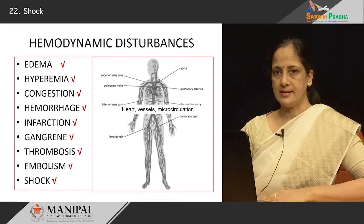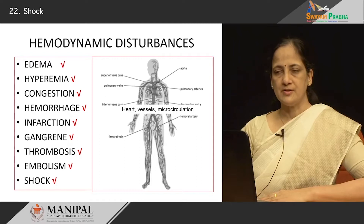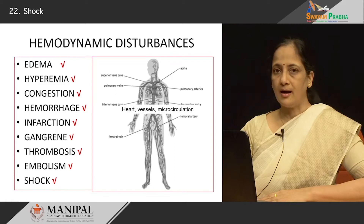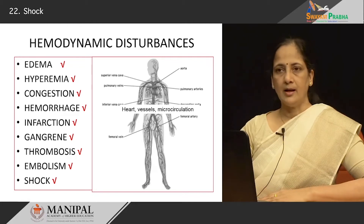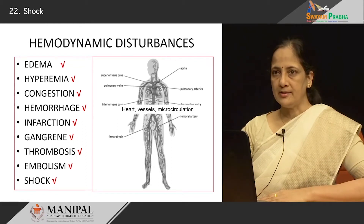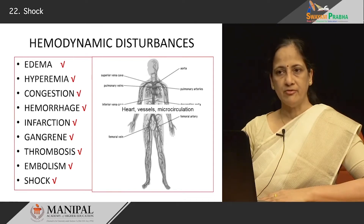In this series, we look at disturbances in the circulation, be it at the level of the heart, in the arteries, arterioles, microcirculation, venules or veins. Under this chapter, we have seen a couple of other topics like edema, hemorrhage, infarction, gangrene, and embolism.